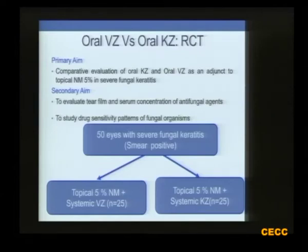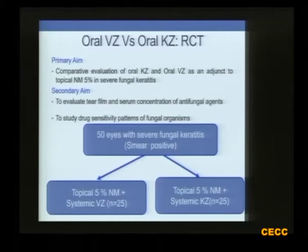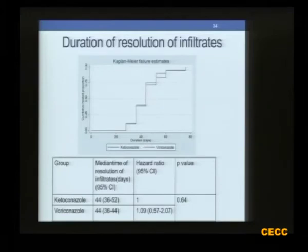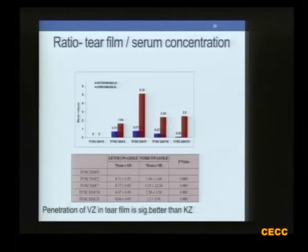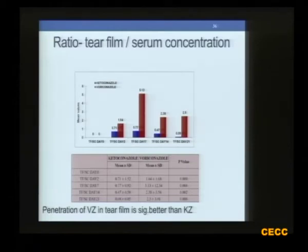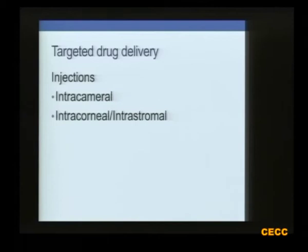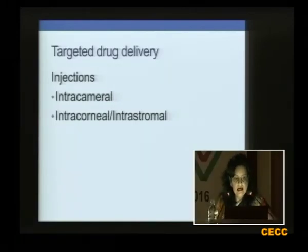There was no randomized controlled trial to say which systemic drug is better — ketoconazole or voriconazole. So we conducted this RCT, accepted at the forthcoming American Academy of Ophthalmology, where severe fungal keratitis cases received either topical natamycin with systemic voriconazole or topical natamycin with systemic ketoconazole. In terms of healing, both drugs did well, but for visual acuity and tear film to serum concentration ratios, systemic voriconazole was far superior. We are therefore inclined to recommend systemic voriconazole over systemic ketoconazole.